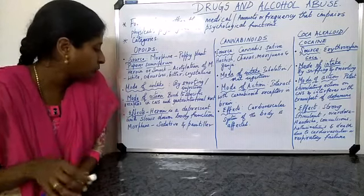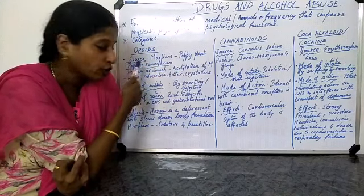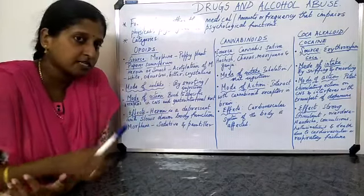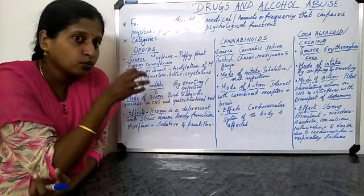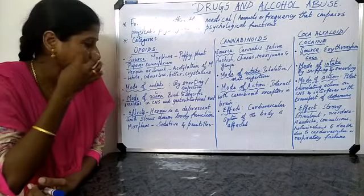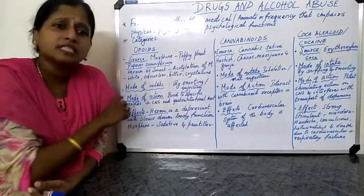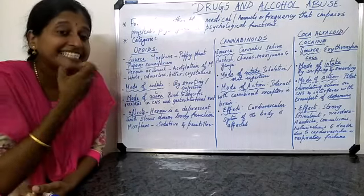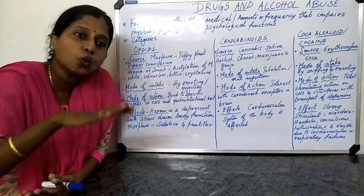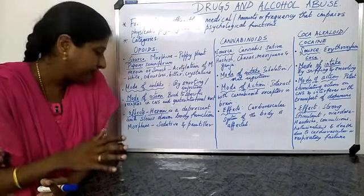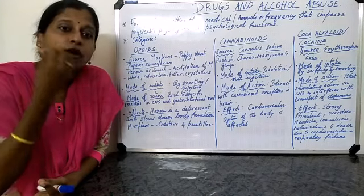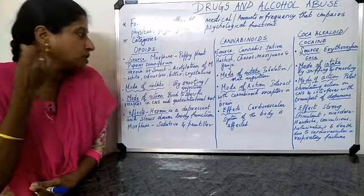The mode of action of opioids: they bind to specific receptors in the central nervous system as well as in the gastrointestinal tract. The effect is that they act as depressants, slowing down body functions. They also act as sedatives, inducing sleep, and are administered as pain killers to reduce pain.